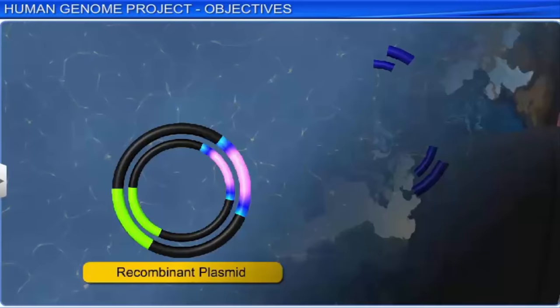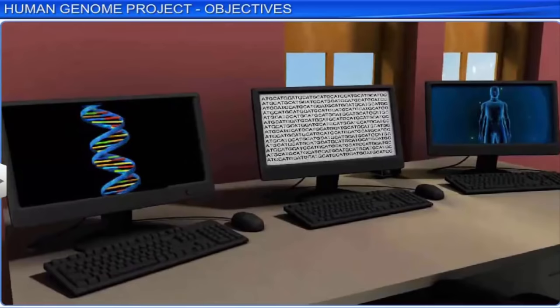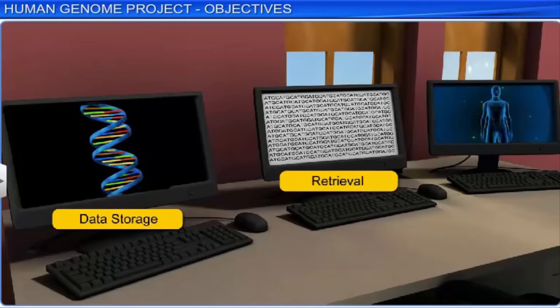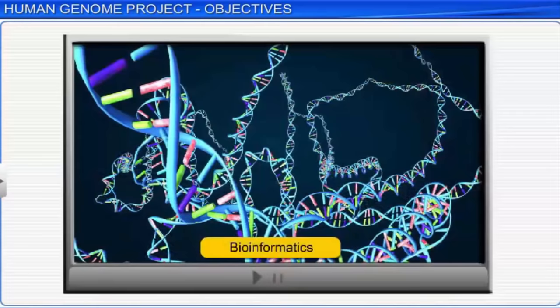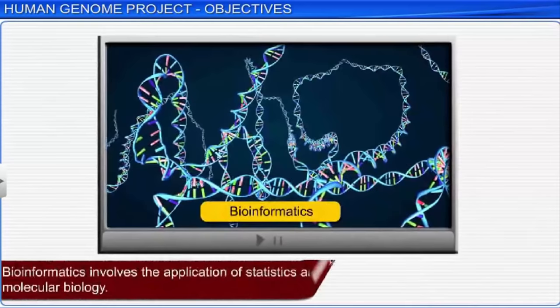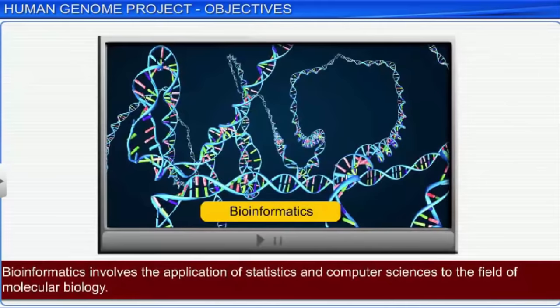Since the HGP aimed to store the entire genome information in databases, it required high-speed computational devices for data storage and retrieval. In addition, the HGP required improved tools for data analysis. Thus, the HGP is also credited with contributing to the rapid development of a new branch of biology called bioinformatics, which involves the application of statistics and computer sciences to the field of molecular biology.